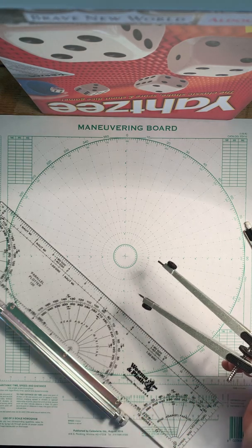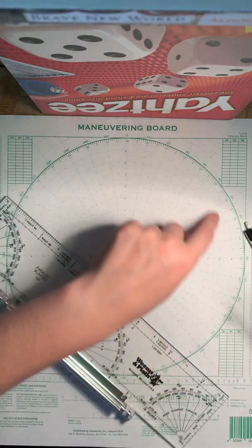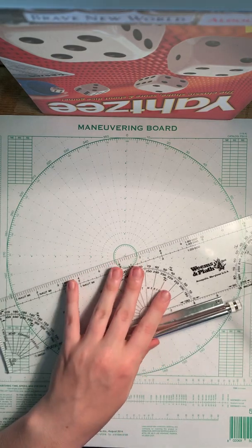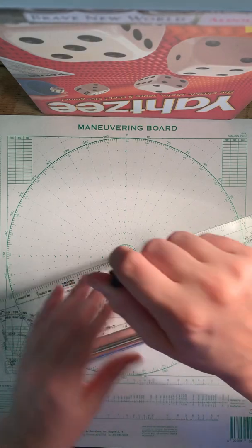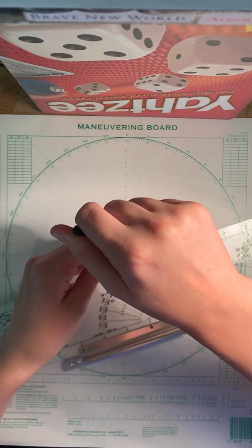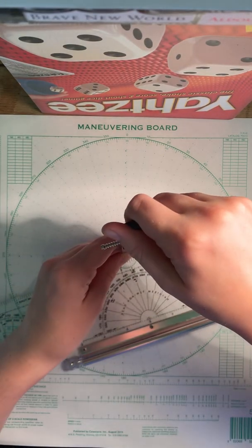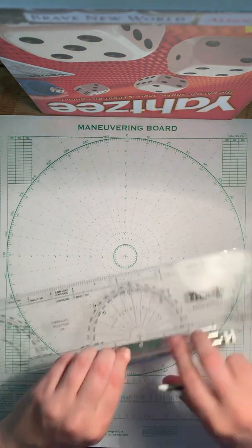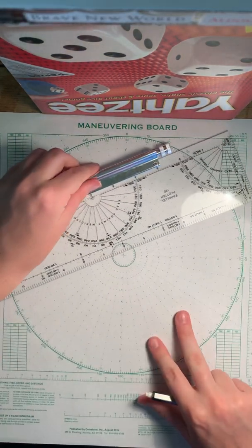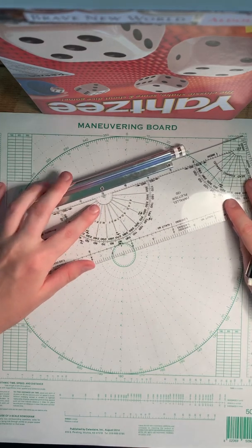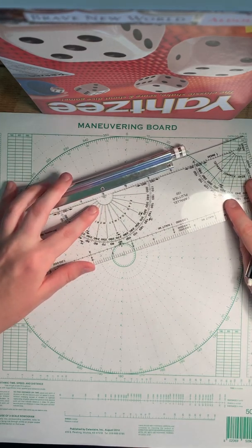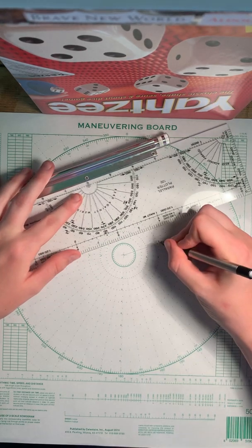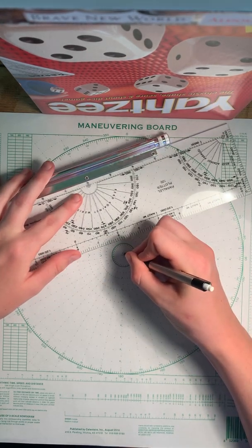So you have that. And then, of course, 070 true. So true bearings are on the outside, so we're going to be up here. And then we make a line from E to that point. So this is R and this is E.